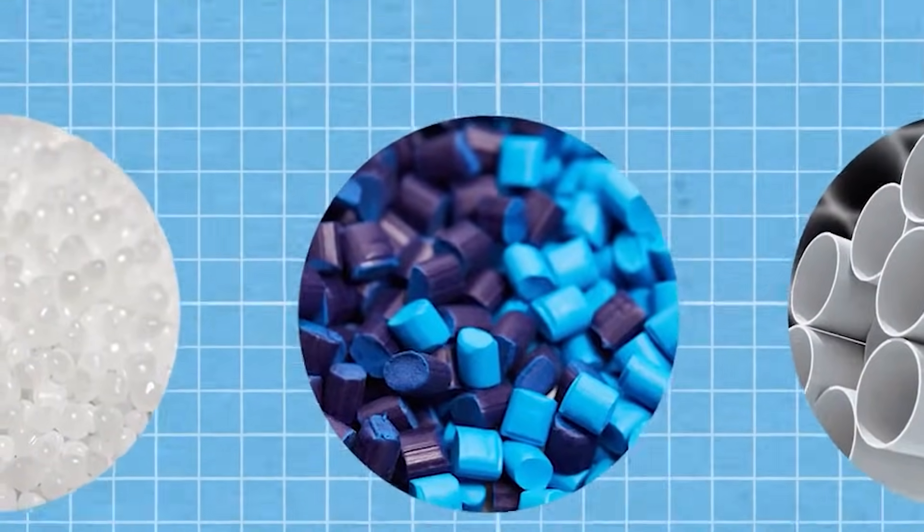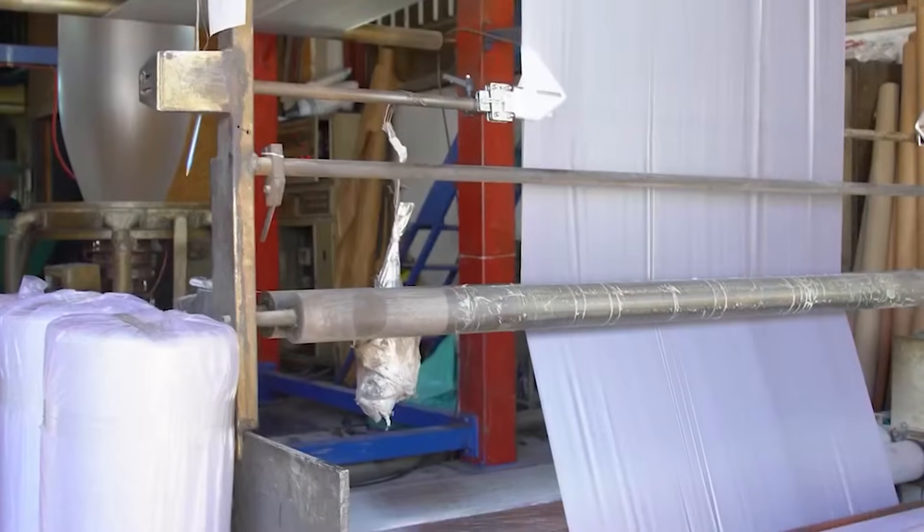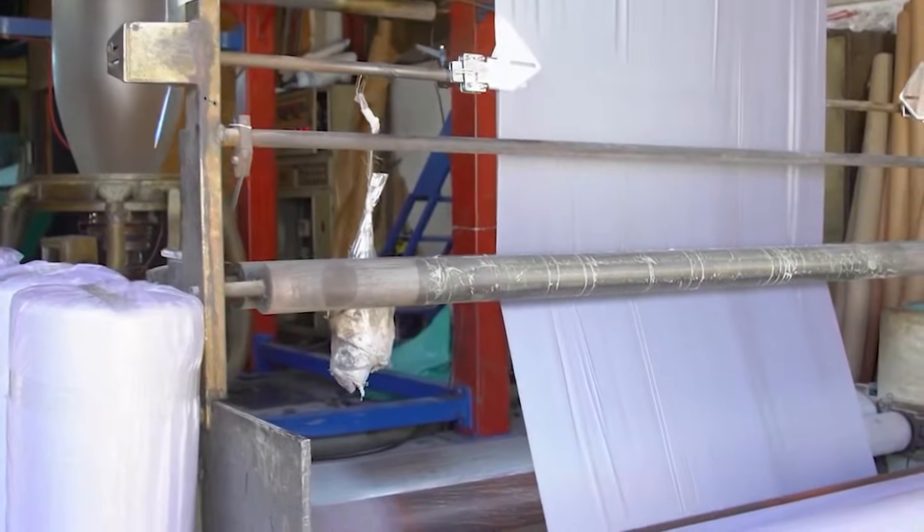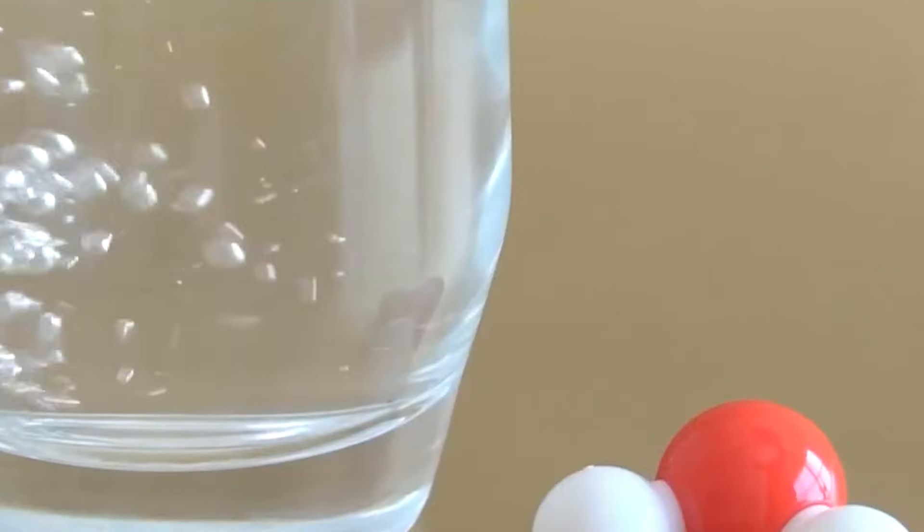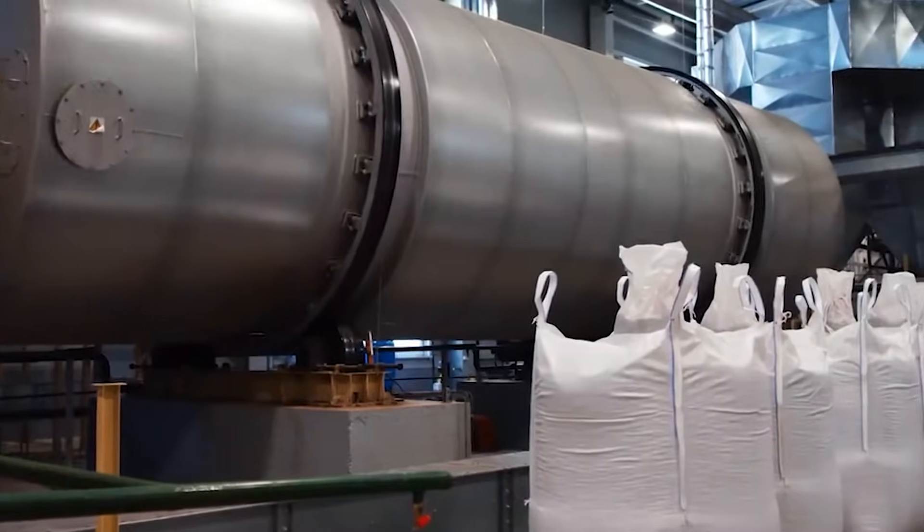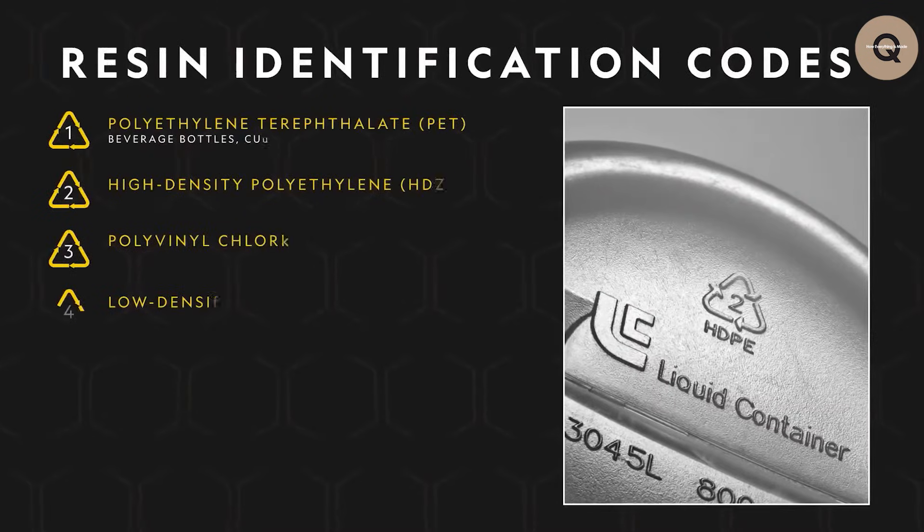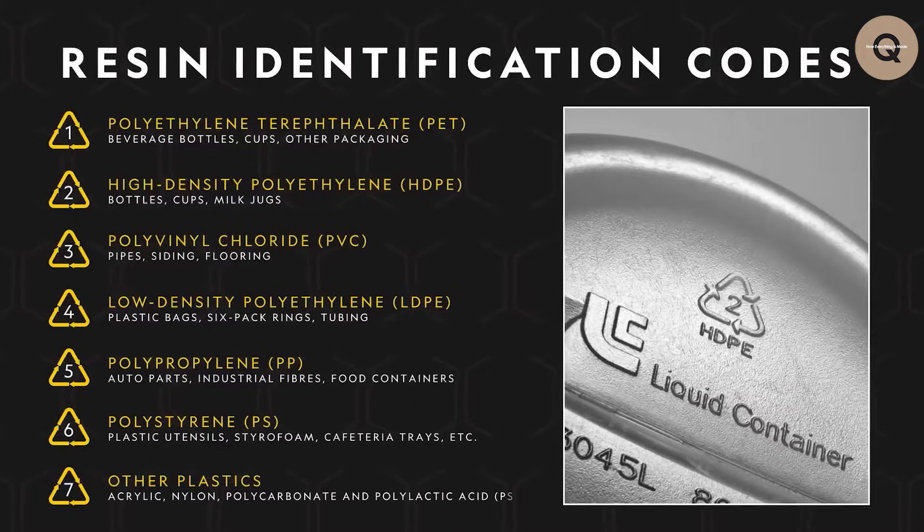A process known as addition polymerization is carried out on monomers such as ethylene and propylene. During this process, catalysts and initiators break the double bonds that are present in the monomers, thereby creating polymer chains. It's through the use of this process that polyethylene, polypropylene, and polyvinyl chloride or PVC are manufactured.